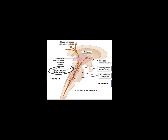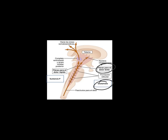Para las fibras del dolor rápido, el neurotransmisor utilizado es el glutamato. Para las fibras del dolor lento, el neurotransmisor utilizado es la sustancia P. Estas son las fibras del dolor rápido, y acá están las fibras del dolor lento, que van a divergir e interactuar con la formación reticular y la sustancia periacueductal del mesencéfalo.